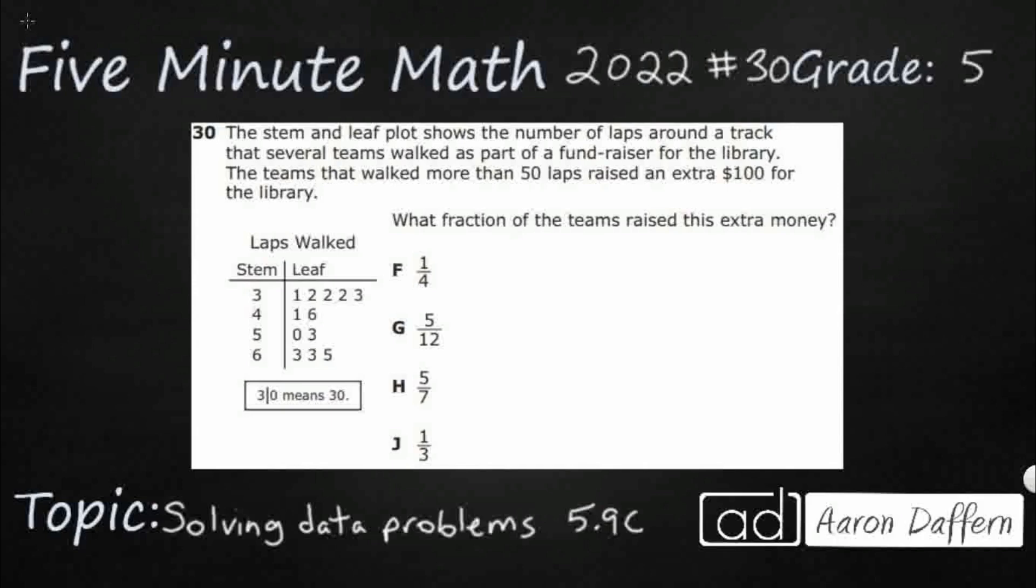We have a stem and leaf plot, and it shows the number of laps around a track that several teams walked as part of a fundraiser. The teams that walked more than 50 raised an extra $100. What fraction of the teams raised this extra money?